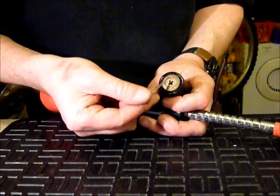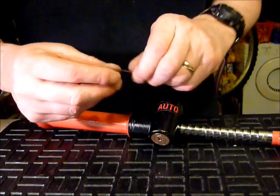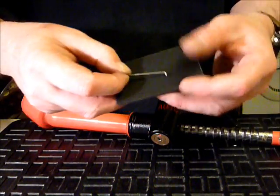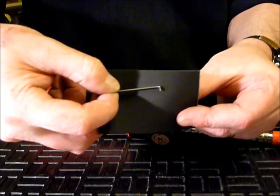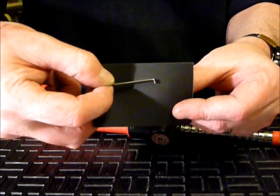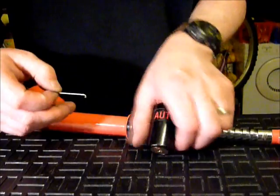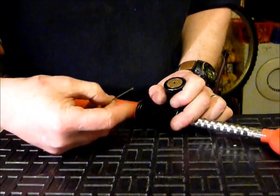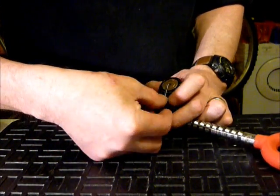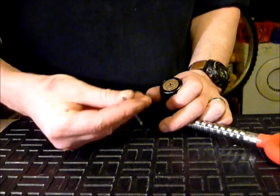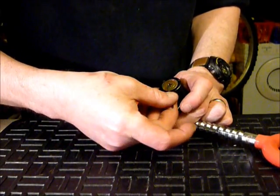I'm using a Southord medium type hook, and basically all you've got to do is once you've got your little tension wrench in - mine's a little tension wrench that I made for this because my other ones were actually pinging out of it.